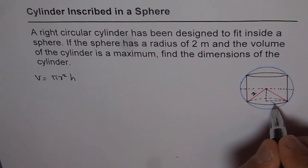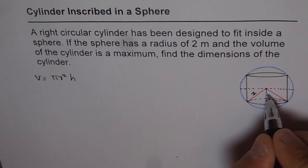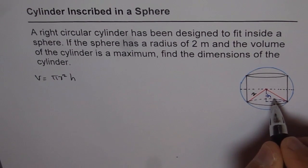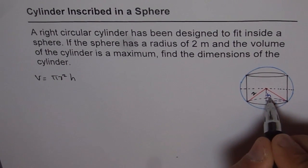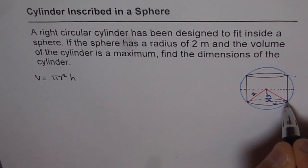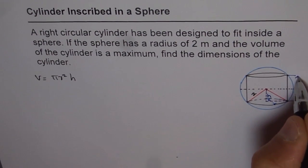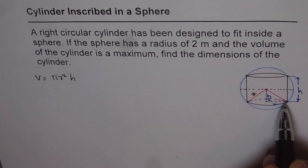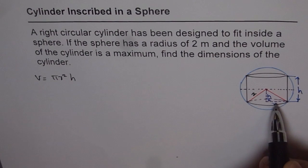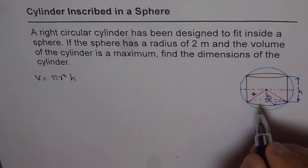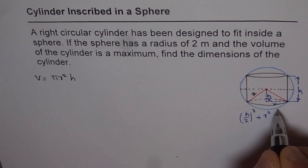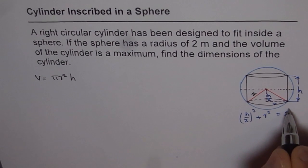Let this be the radius r and that is the height — I should say half of the height. So this is half the height of the cylinder. Let me write this as h over 2, and I am writing this as my height of the cylinder. So now we have a right triangle here. From this right triangle we can find a relation between height and radius. We get (h/2)² + r² = 2².